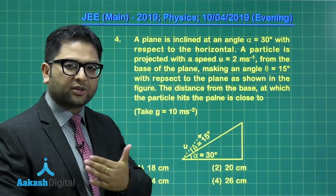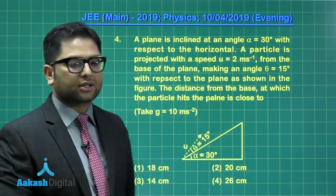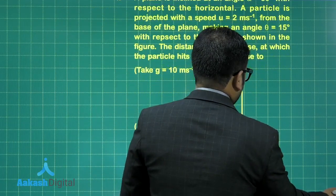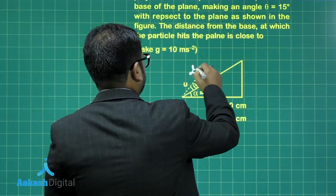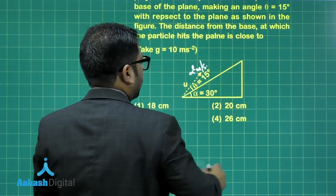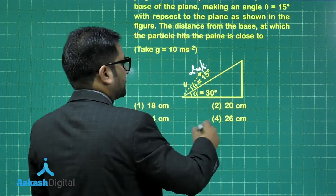So we need to calculate the range along the inclined plane. This is 2 meters per second, that's the initial speed. Let's try to resolve the acceleration as well.